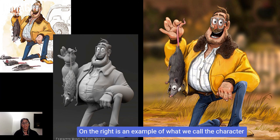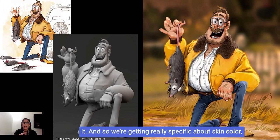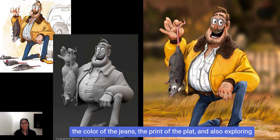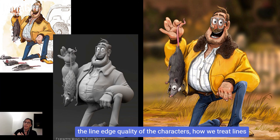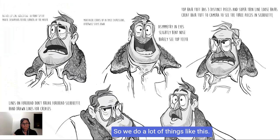On the right is an example of what we call the character paint, which is done by Arthur Fong. We give Arthur the model and he'll paint over it, getting really specific about skin color, the color of the jeans, the print of the plaid, and also exploring the line edge quality of the characters — how we treat lines on the face and all of those details.